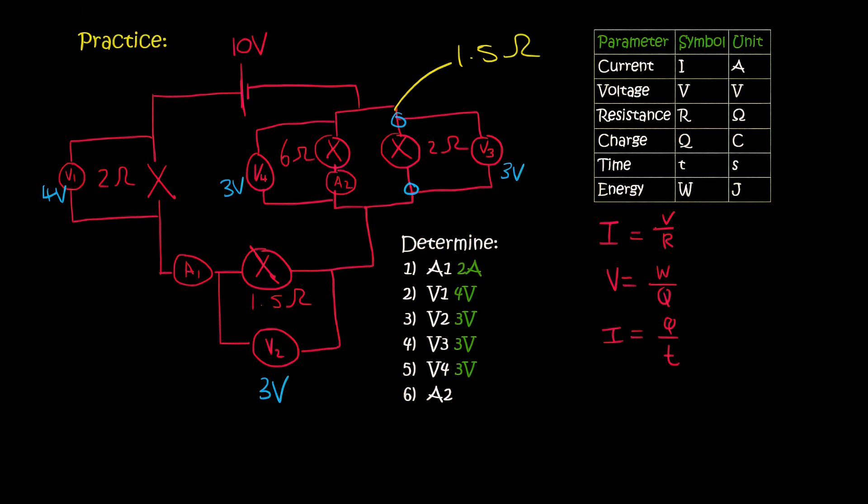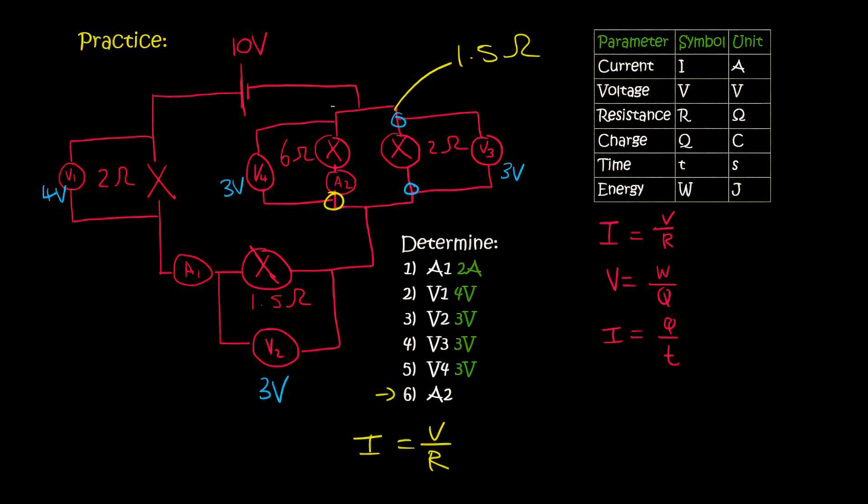Now here's where things get really interesting. So now we want to find number 6, which is A2. So A is a current, and so we can use I equals to V over R. Now A2 is only this branch. So what is the voltage across there? Well, we said it's 3 volts, and the resistance is 6. And so that's going to give us 0.5 amps.